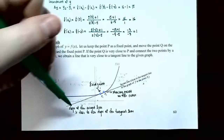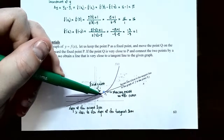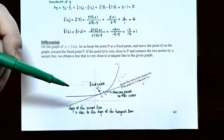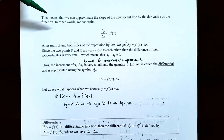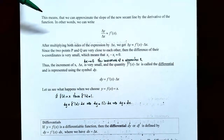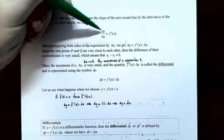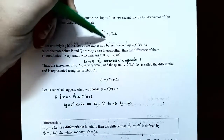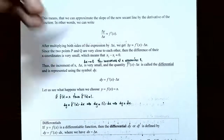If you calculate the slope of this line you get the slope of the secant line. As Q moves closer to P, the secant lines get closer to the tangent line, so the slope of the secant line gets closer to the slope of the tangent line. This means we can approximate the slope of the secant line by the derivative of the function. In other words, delta y divided by delta x is approximately f prime of x.